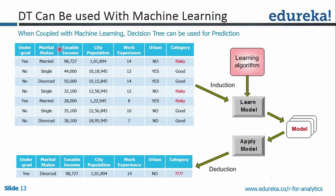When decision-making is coupled with machine learning, decision tree can be used for prediction. Decision tree on its own is a different concept — standalone, it can be used in project management as a simple technique to help you decide which decision is better. Now let's come back to our banking algorithm.